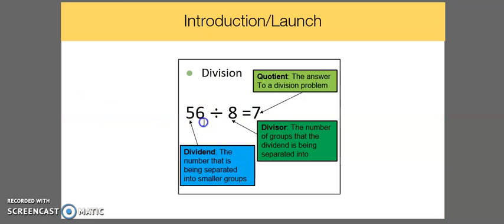In division, let's say if we have the example 56 divided by 8 equals 7, the 56 represents the dividend. This is the number that is being separated into smaller groups.